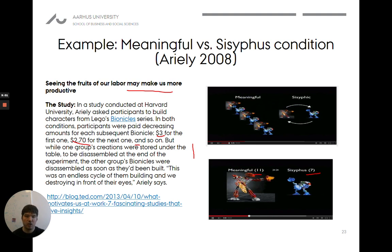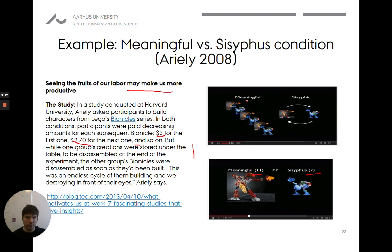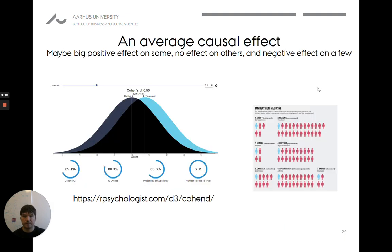They're not being asked: 'would you feel annoyed if someone disassembled your Bionicle right in front of you?' — if yes, they get into the meaningful group. We don't want this kind of selection. We want a completely random allocation of people into one group or the other. The conditions should be entirely similar, with all other factors the same and only one variable changed — the fact of whether it's disassembled or not. And of course, we have to remember this is an average causal effect.